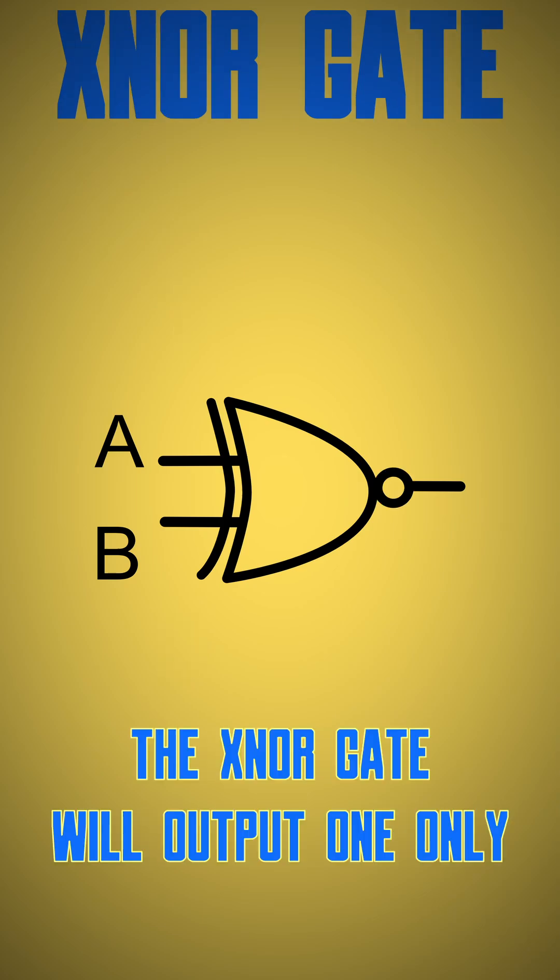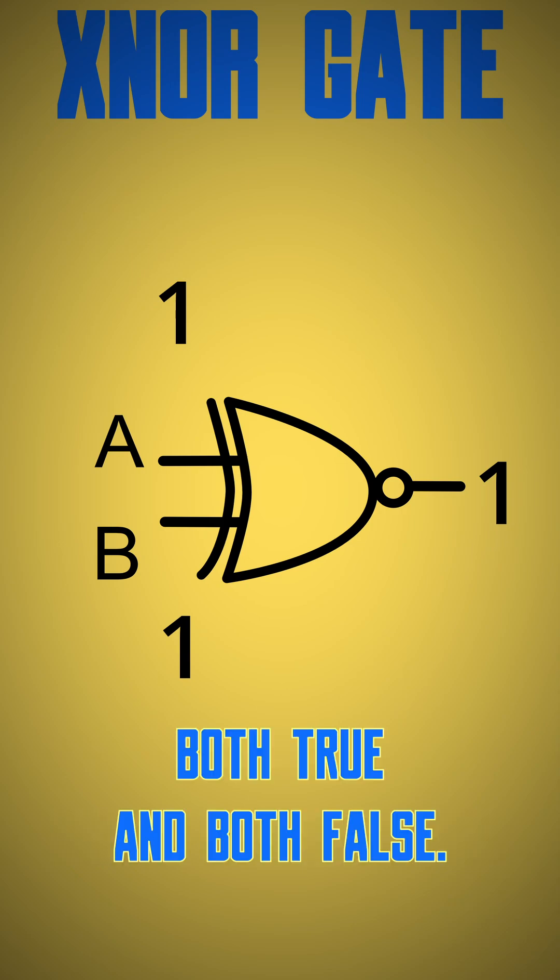And the last is XNOR gate. The XNOR gate will output one only if the inputs are the same, both true and both false.